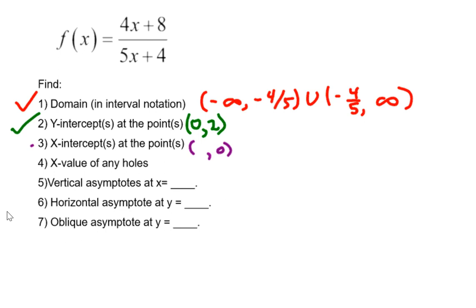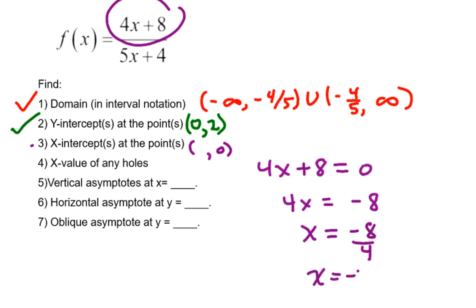When you have a rational function, only the top really matters when you're solving for 0. So we're going to take 4x plus 8, set it equal to 0, and solve for x. We subtract 8 on both sides, divide by 4 on both sides, and we get x equals negative 2. And we are done with number 3.